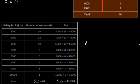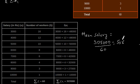Now, we can calculate mean salary as mean salary is equal to 305000 divided by 60 which is equal to 5083.33.